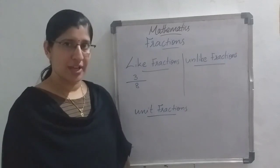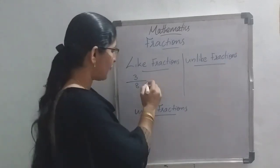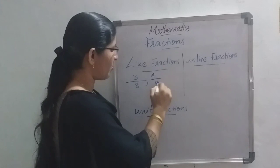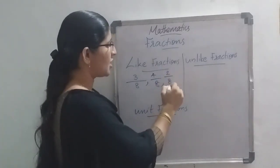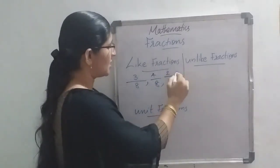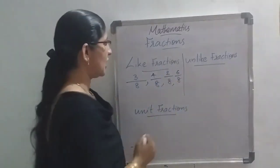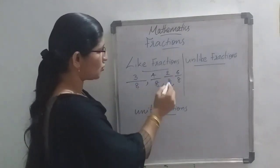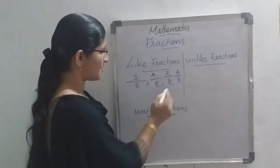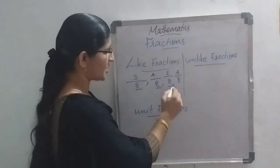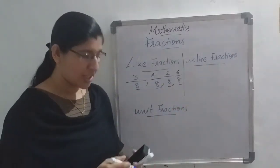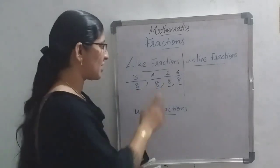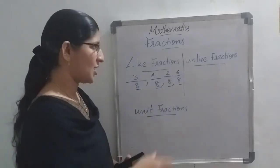What are like fractions? The fractions which have the same denominator are called like fractions. Look here: 3 by 8, 4 by 8, 2 by 8, and 6 by 8. Here all the fractions have the same denominator, so these are called like fractions.